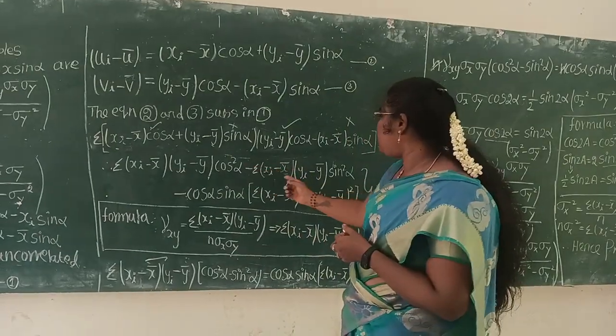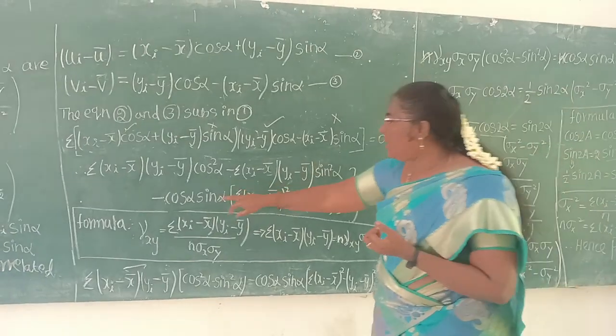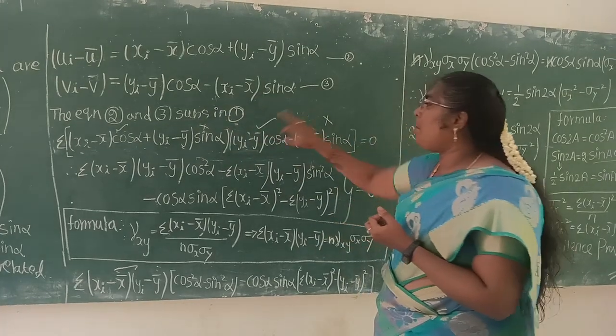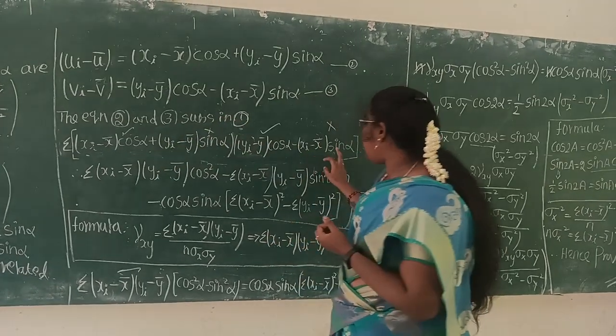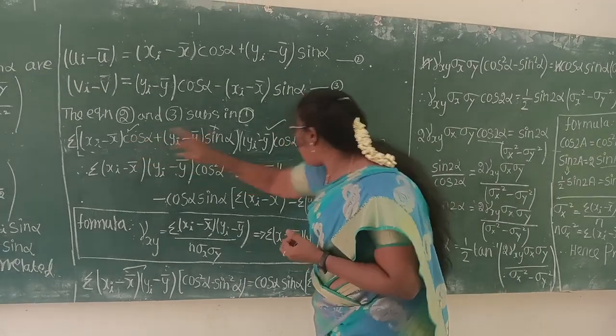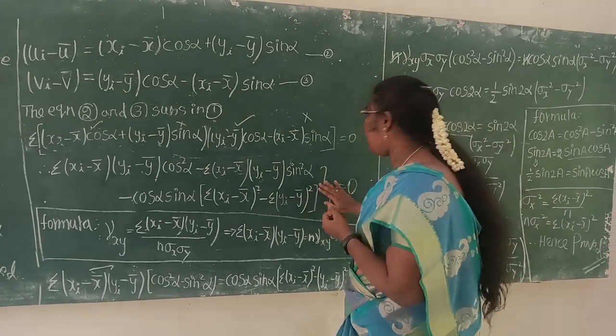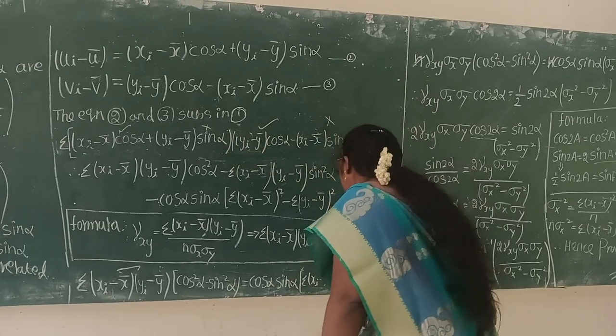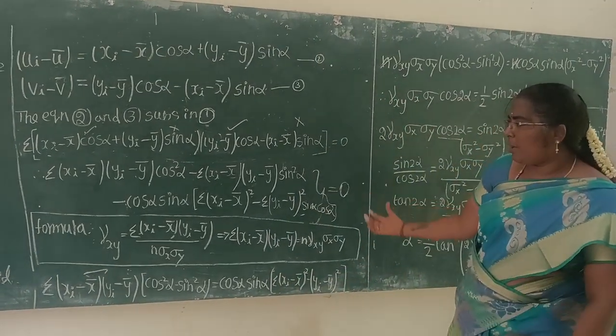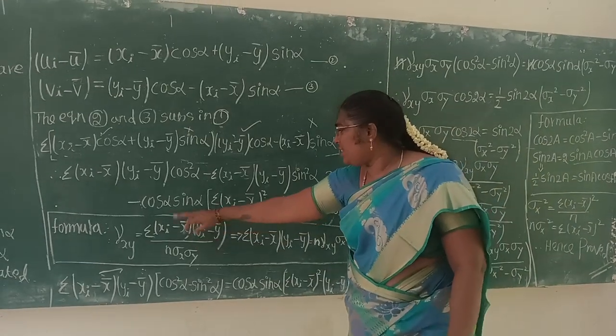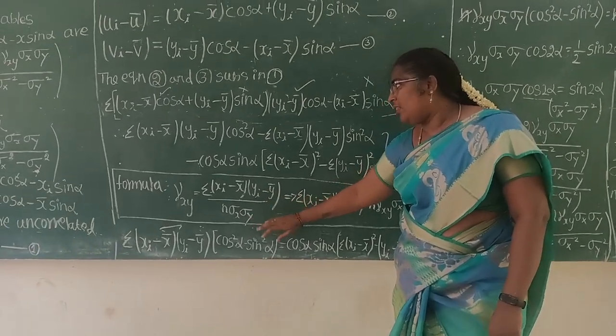Then we will add the values. The two values are yi minus y bar, xi minus x bar, sin alpha into sin alpha, sin squared alpha. That is minus. If you have cos alpha, sin alpha, xi minus x bar. That is the value. Then cos alpha, yi minus y bar. The same value, xi minus yi. Sin alpha into cos alpha.